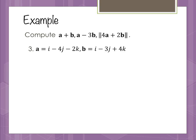The distance between those two points is 5. For vector addition, adding a plus b in i, j, k form is done component-wise. We add the i components to get 2i, add the j components to get negative 7j, and add the k components to get positive 2k. So that's a plus b.